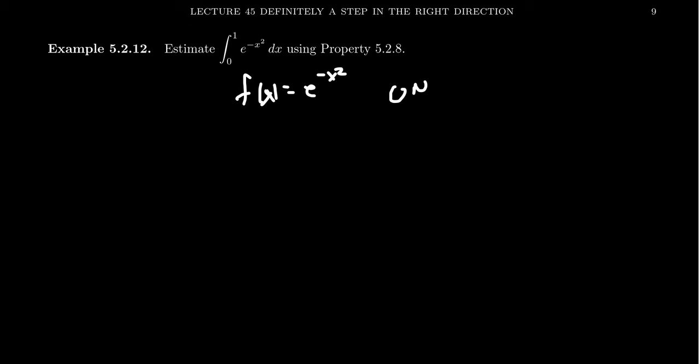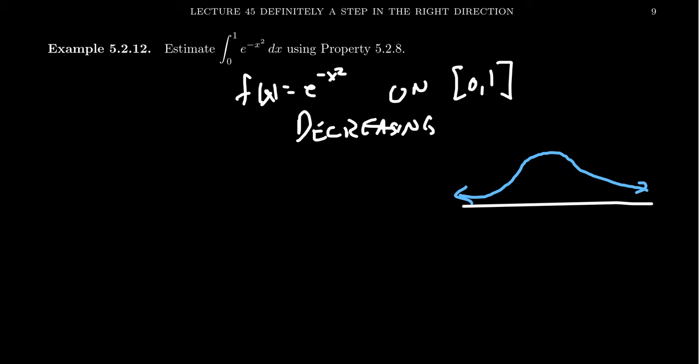If we take f of x to equal e to the negative x squared, what we can say is the following. On the interval 0 to 1, this function is always decreasing. Just to give you an idea of the graph, if we were to graph this thing, this graph would look something like the following. This isn't perfectly drawn to scale, but this will suffice for us. And so we're looking at an interval like something like this from 0 to 1. We're going to get this decreasing function.